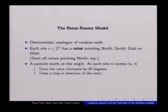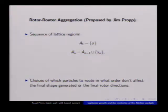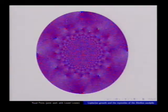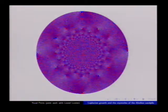The rotor-router model is what I showed you in the simulation. In the plane, rotors point north, south, east, or west. As I showed you, you turn the rotor clockwise and take a step in the direction of the rotor, giving a sequence of lattice regions. Each one is obtained by adding one new point and seeing where it lands. This model was proposed by Jim Propp, who looked at the simulation and saw it also looked like a disk. This is how the rotor-router model looks after one million particles.